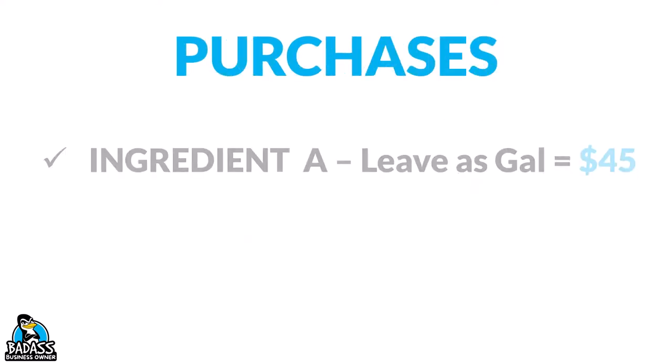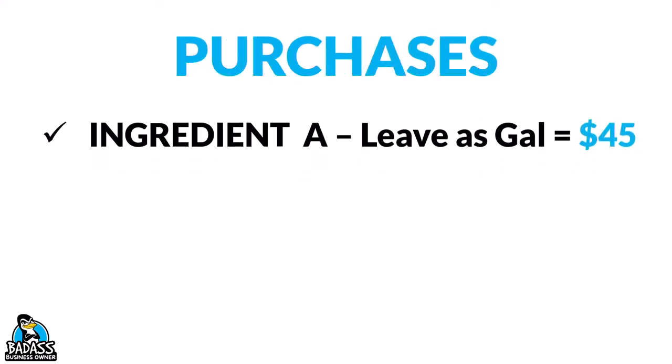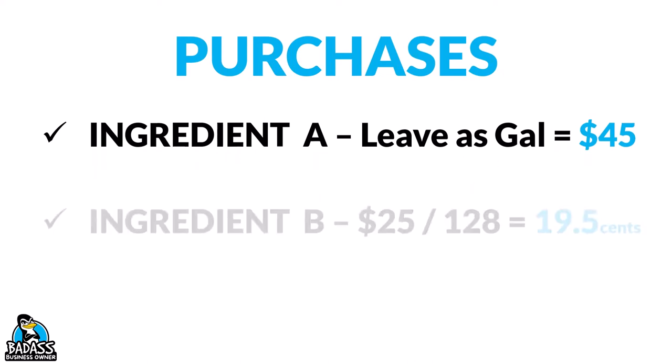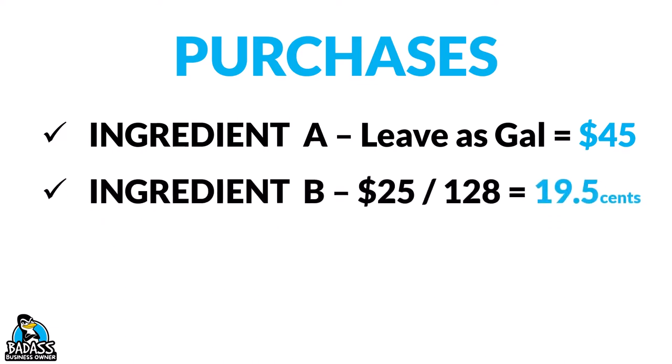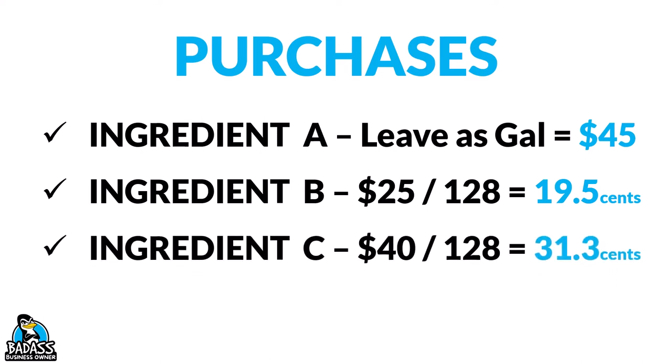So how does this look? First we break it down to the smallest unit we need. Ingredient A we'll leave as gallons at $45. For Ingredient B, we take $25 divided by 128 ounces, which gives us 19.5 cents per ounce. For Ingredient C, $40 divided by 128 ounces means it's 31.3 cents per ounce.